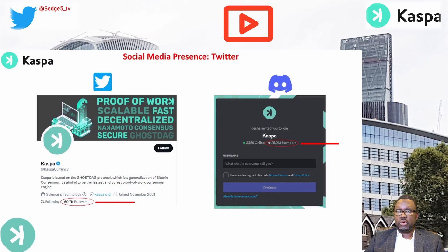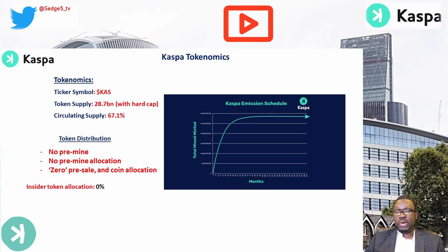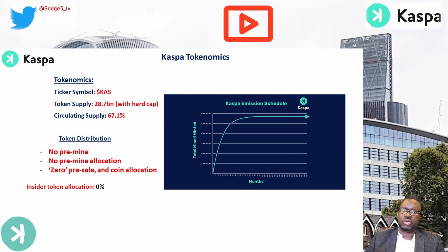Social media presence: Casper has just over 60,700 Twitter followers and just over 25,200 Discord members. Team: approximately 17 members according to LinkedIn, making it a relatively small team. Tokenomics: ticker KAS/CAS, total token supply 28.7 billion, circulating supply 67.1%, with zero pre-sale and zero insider coin allocation — which is commendable and typical of most proof-of-work ecosystems.